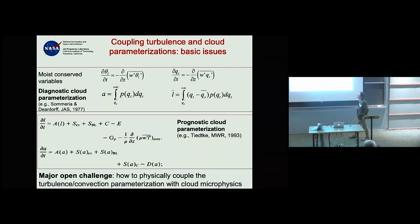On the other hand, many cloud parameterizations have evolved to calculate prognostic variables like mean liquid water, mean ice, precipitation, and snow. There is very little communication between these two approaches and very little information about turbulence entrainment feeding into these schemes.